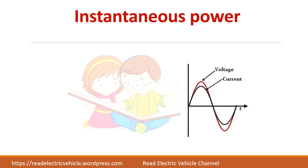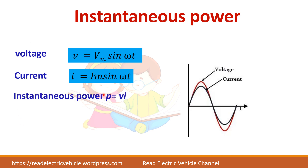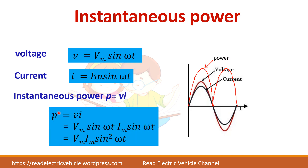Instantaneous power is given by P = V × I. When you multiply these two waveforms: when both are positive, the power is positive; when both are negative, multiplying them also gives positive power. So the instantaneous power is always positive in a pure resistive circuit.